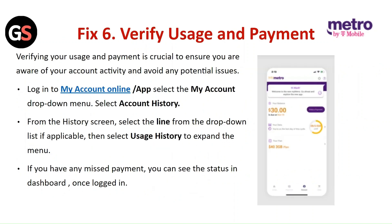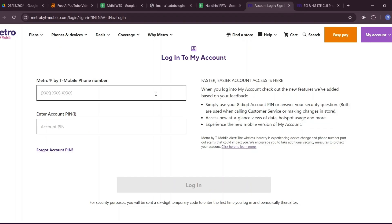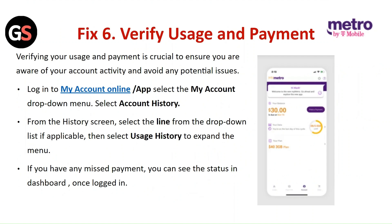Fix 6: Verify usage and payment. Verifying your usage and payment is crucial to ensure you are aware of your account activity. Log in to the My Account Online app, select the My Account drop-down menu, then select Account History. From the history screen, select the line from the drop-down list if applicable, then select Usage History to expand the menu. If you have a missed payment, you can see the status in the dashboard once logged in.